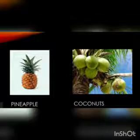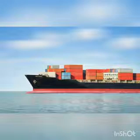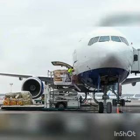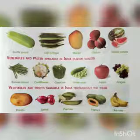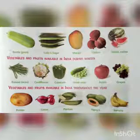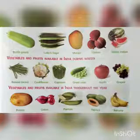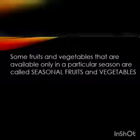Mango is called the king of fruits. But wherever you may be living in India, you can get to eat all these fruits. This is because fruits and vegetables are easily transported by boats, trucks, trains and even aeroplanes to far-off areas. Some fruits and vegetables like onions, potatoes and bananas are available throughout the year. Carrots, peas and grapes grow in winter. Mangoes are only available in summer. Such fruits and vegetables that are available only in a particular season are called seasonal fruits and vegetables.